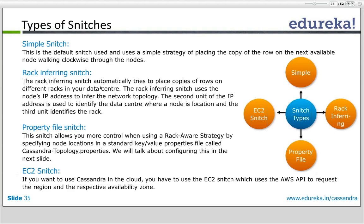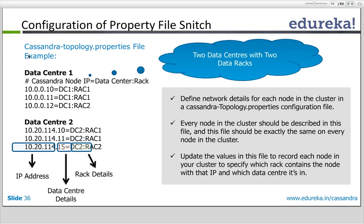In case your IP addresses are not configured that way, you have the option of defining this information in a property file — the cassandra-topology.properties file in the conf folder. You declare each IP address and map it to a data center and rack, for example: this IP address maps to data center one, rack one, and so on.